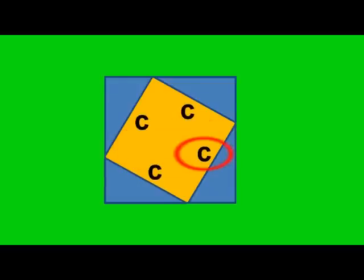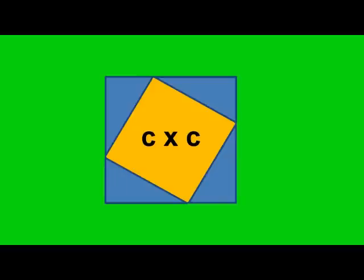Here is a square, which has four right triangles that are the exact same size. These triangles create another square inside. This yellow square has four equal sides — we'll call each one c — which are also the hypotenuses of the four right triangles. To find the area of a square, we multiply two of the sides, or just square one of them, since they are all the same. So the yellow area is c squared.